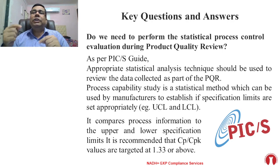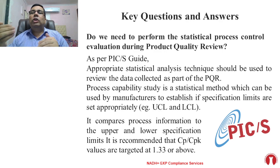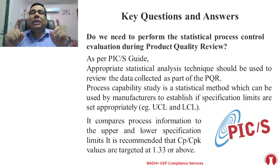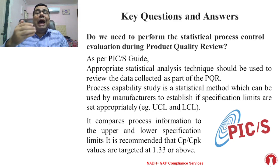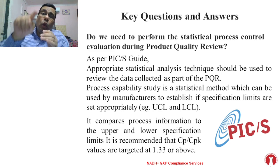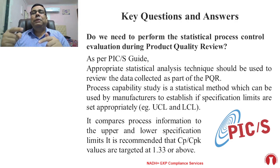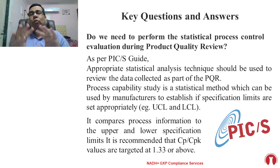The answer to the first question — do we need to perform SPC evaluation during PQR — is yes, in line with the PICS guideline. The PICS guideline states: appropriate statistical analysis techniques should be used to review data collected as part of the PQR. Process capability study is a statistical method used to establish if specification limits — upper and lower control limits — are set appropriately. It is recommended that Cp or Cpk values are targeted at 1.33 or above.